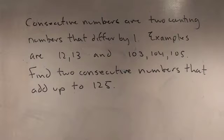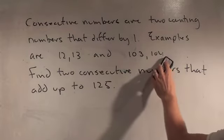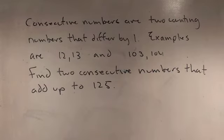Consecutive numbers are two counting numbers that differ by one. I guess I was a little tired when I wrote this out this morning. Examples are 12 and 13, and 103 and 104.